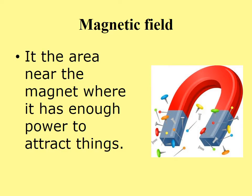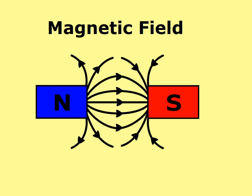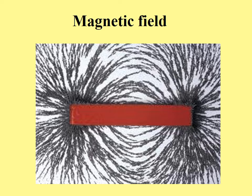Magnetic field: it is the area near the magnet where it has enough power to attract things. We notice that the magnetic field around two magnets — one has a north pole, the other has a south pole. Here is another photo of a magnetic field using iron filings. Notice how the iron filings are around the poles.